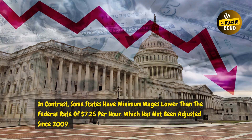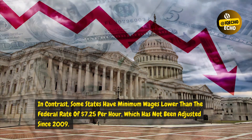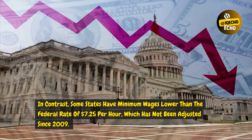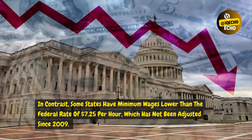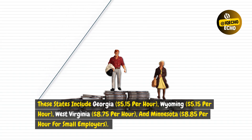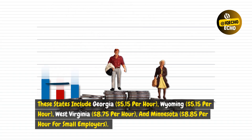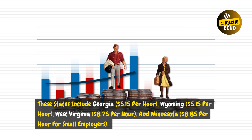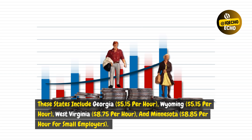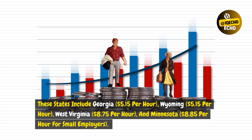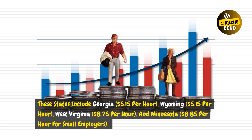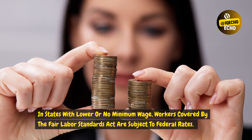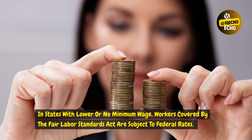In contrast, some states have minimum wages lower than the federal rate of $7.25 per hour, which has not been adjusted since 2009. These states include Georgia at $5.15 per hour and Wyoming at $5.15 per hour. Other notable state rates include West Virginia at $8.75 per hour and Minnesota at $8.85 per hour for small employers. In states with lower or no minimum wage, workers covered by the Fair Labor Standards Act are subject to federal rates.